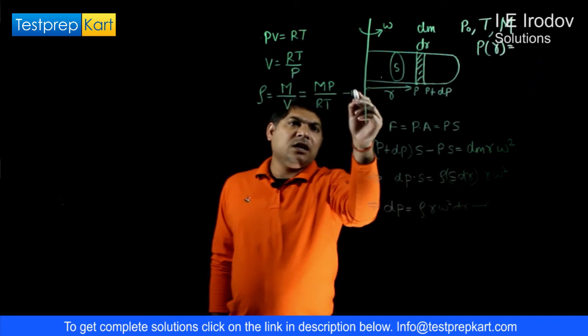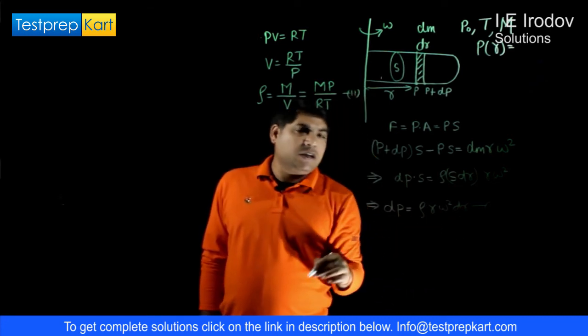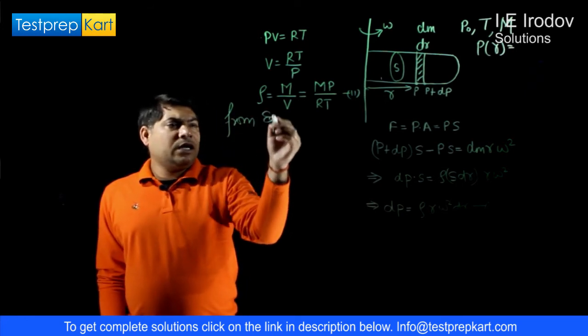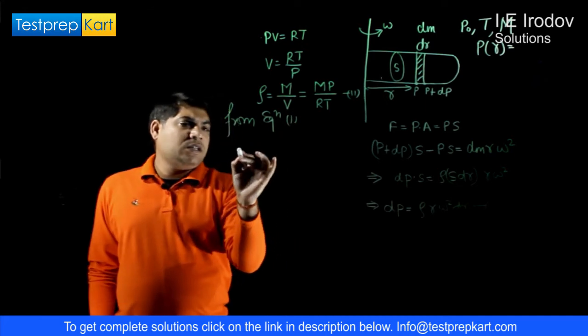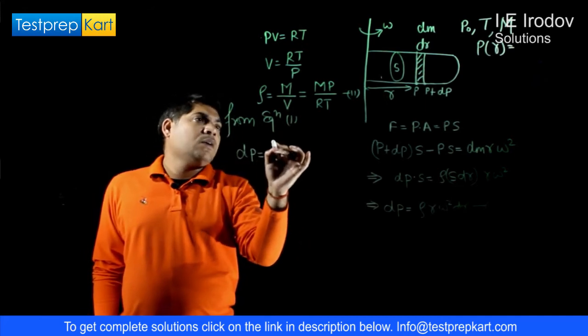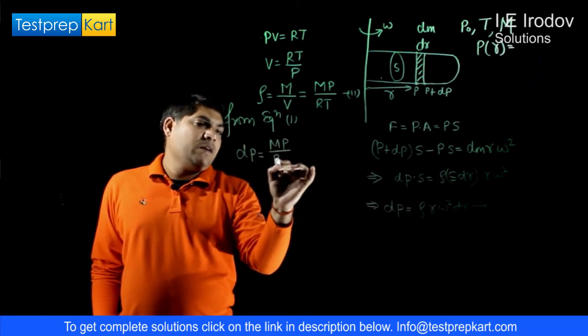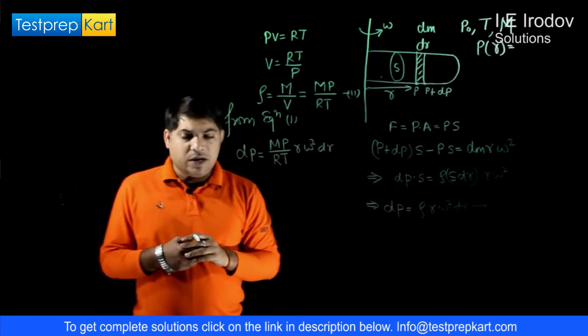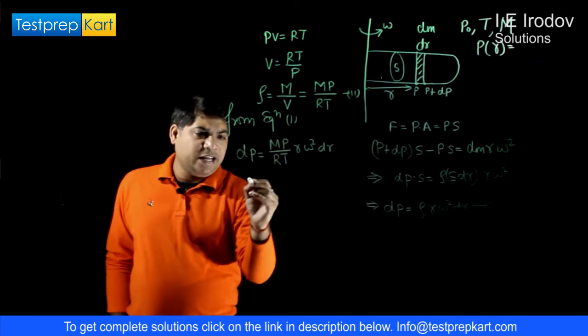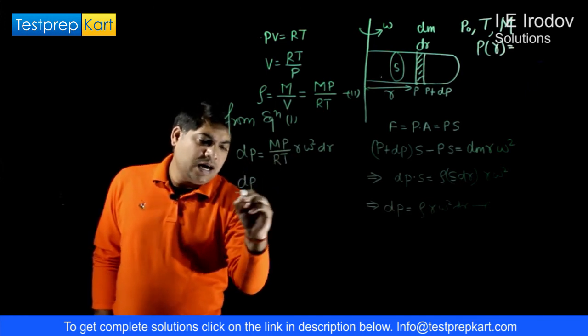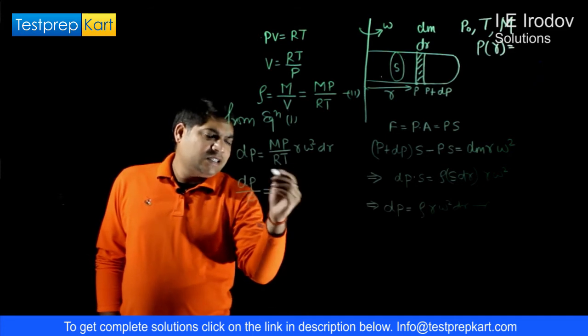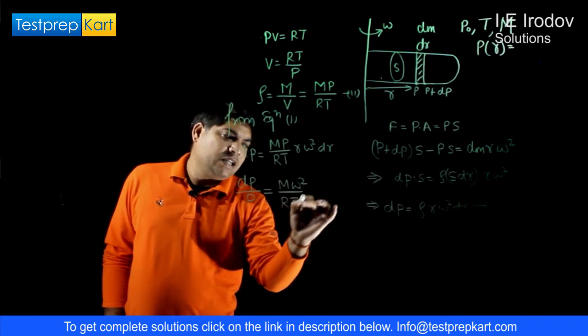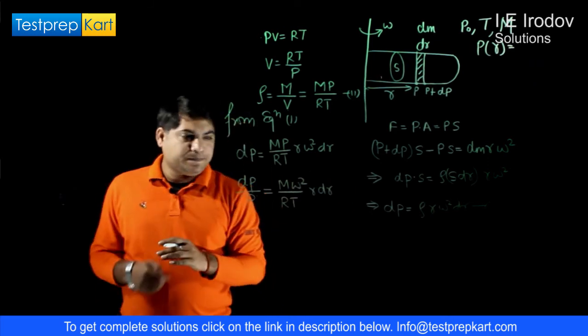Now we can substitute this value of density in equation number 1. We get from equation 1: dP equals MP over RT in place of rho, into R omega square and dR. We can arrange the variables accordingly and take out the constant terms out of the integration. This is M omega square over RT into R into dR.